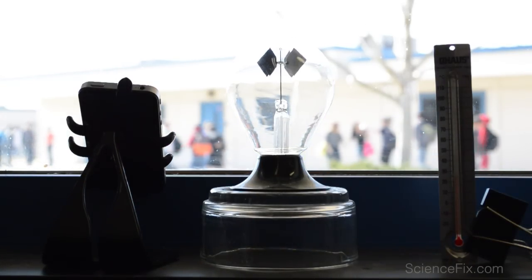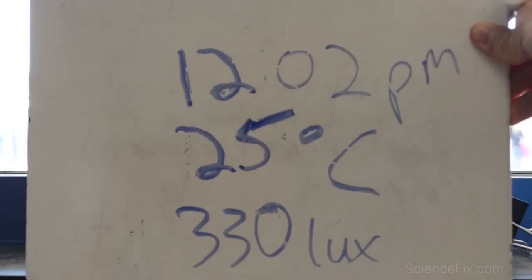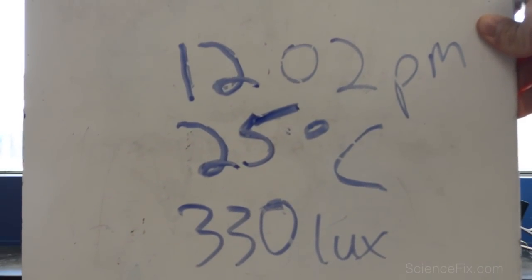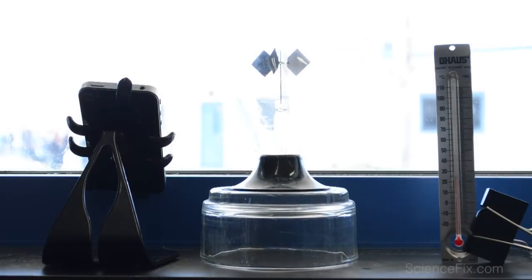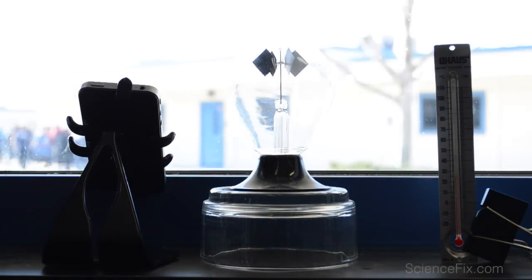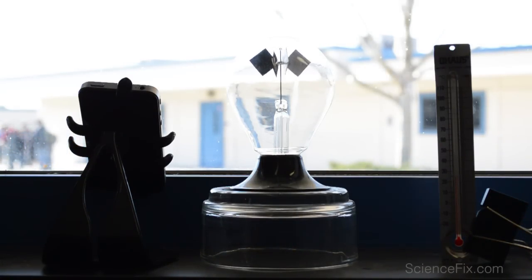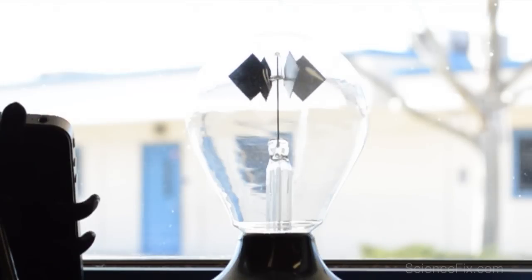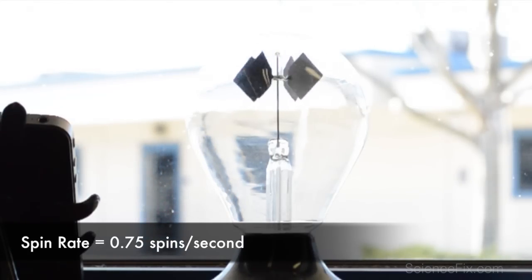Now it looks like it's spinning a little bit faster. The time is 12:02 p.m., so that's about almost 2–3 hours later. The temperature is 25 degrees Celsius and the amount of light is 330 lux. Let's take a closer look at the spinning rate. The spinning rate has increased to 0.75 spins per second.